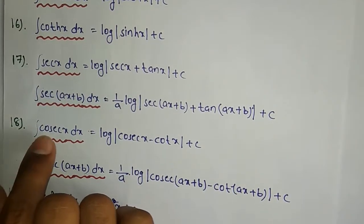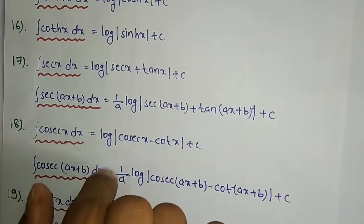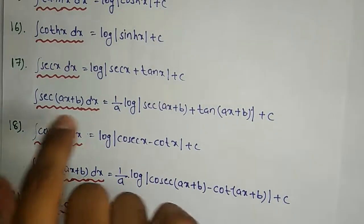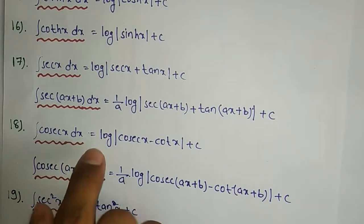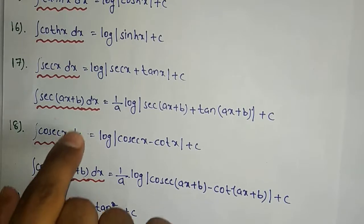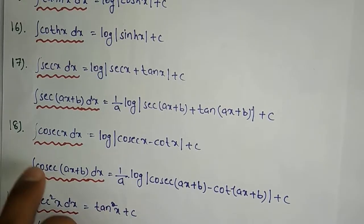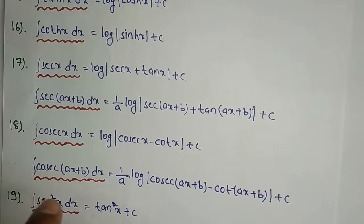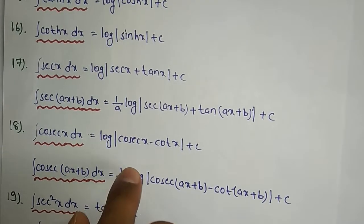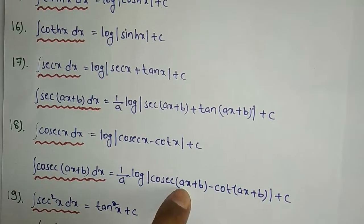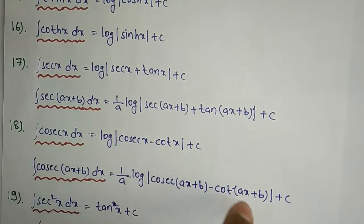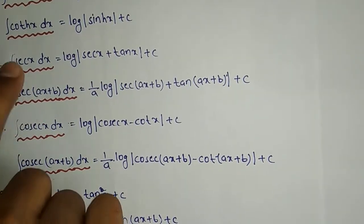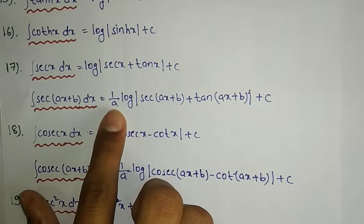The 18th formula: integration of cosecx dx equals log|cosecx minus cotx| plus C. For cosec(ax+b), the inner derivation gives 1/a, so integration of cosec(ax+b) dx equals 1/a · log|cosec(ax+b) minus cot(ax+b)| plus C.